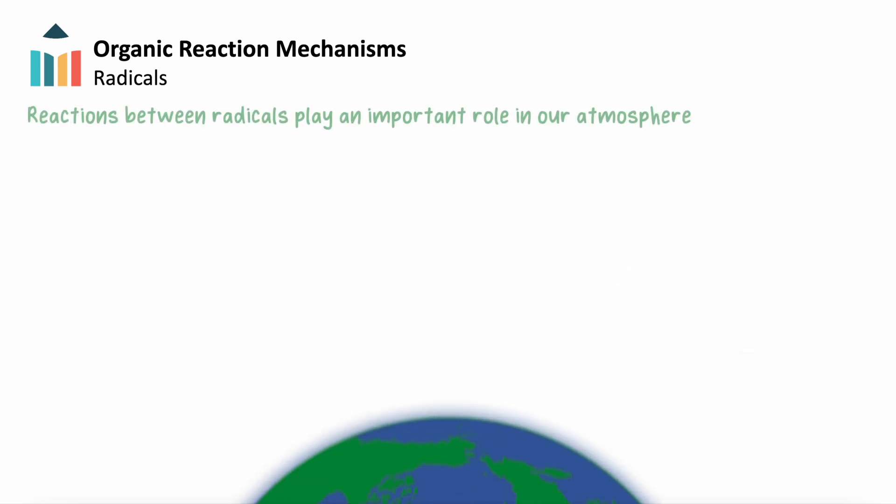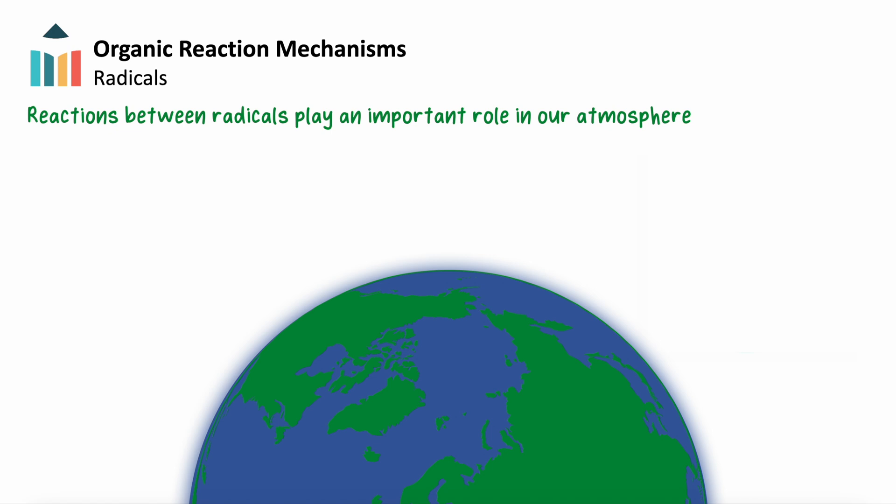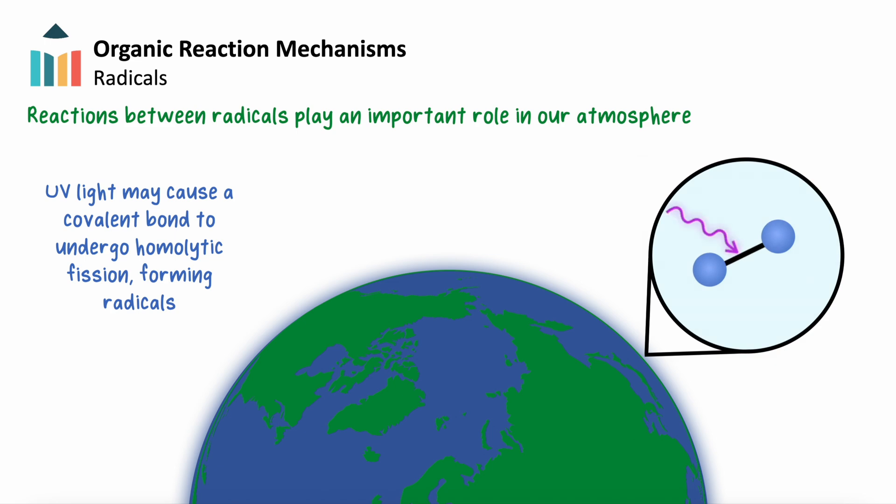Reactions between radicals play an important role in our atmosphere. Radicals are often formed when a molecule absorbs UV light, causing a covalent bond to undergo homolytic fission. For example, Cl2 absorbs UV light to form two chlorine radicals.